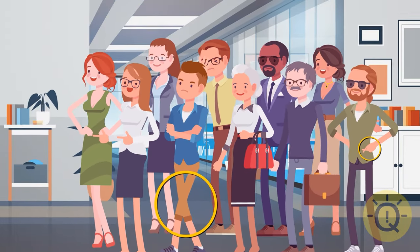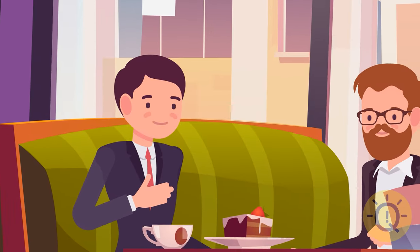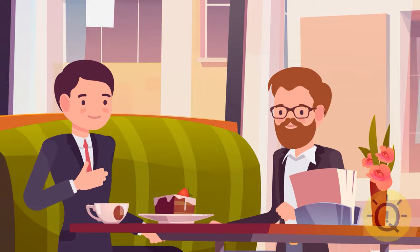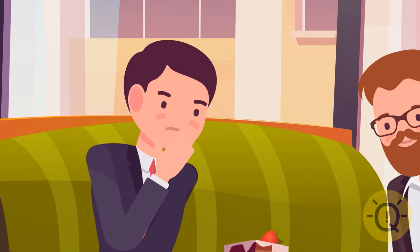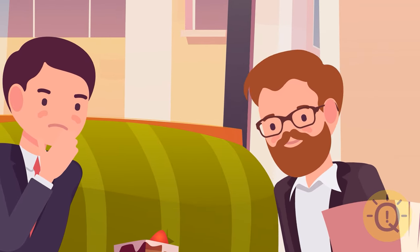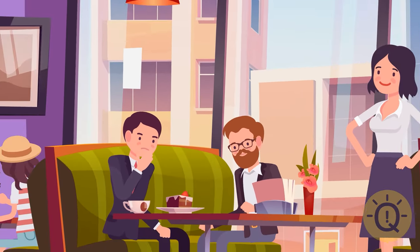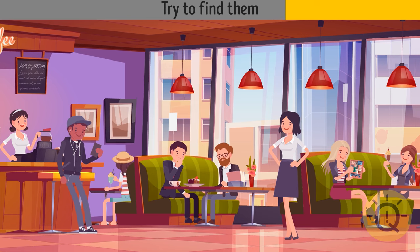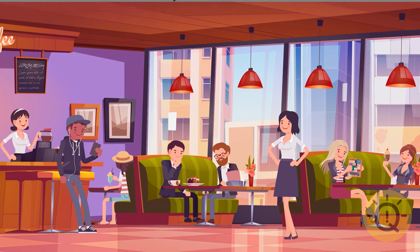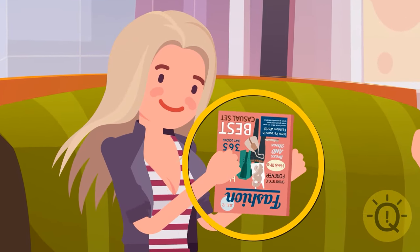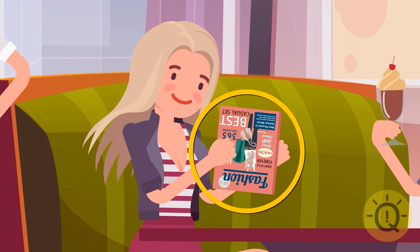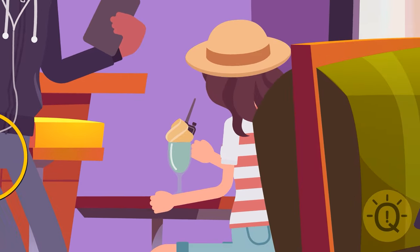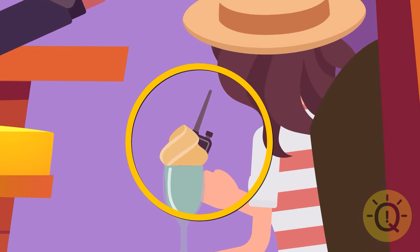Two influential media moguls are having lunch at an expensive restaurant. They're discussing the merger of their companies. The transaction amount is several billion dollars. They're whispering since the terms of this deal are top secret and they suspect that someone can hear them. And they're right. Some curious people are eavesdropping on the conversation between the two businessmen. Try to find them. The girl at the next table is reading a newspaper that is turned upside down. She's obviously trying to overhear what the billionaires are talking about. This guy over there is listening to music, but the headphone wire is not connected to anything. Another girl is sitting at the table in the corner with a cocktail, but instead of an umbrella there's an antenna in her glass. She's recording the conversation.